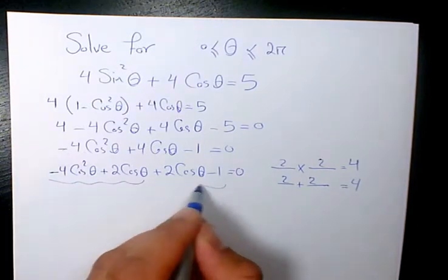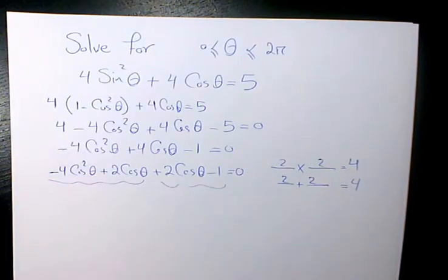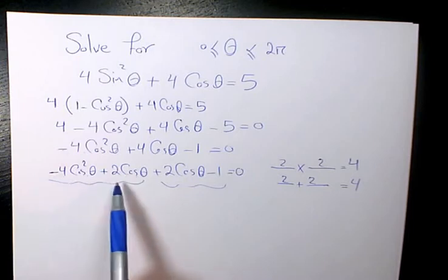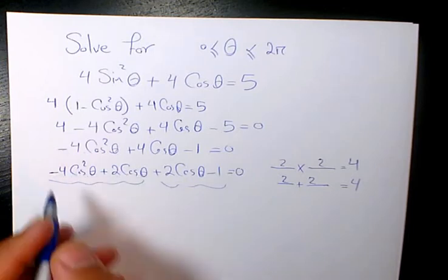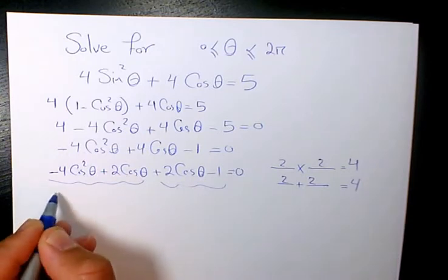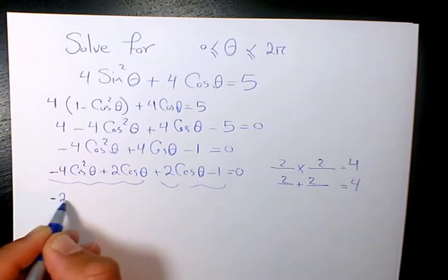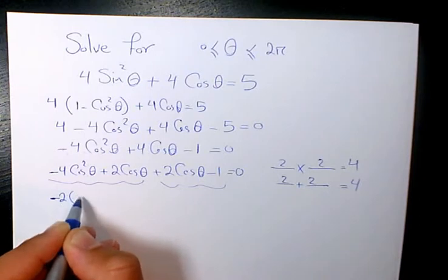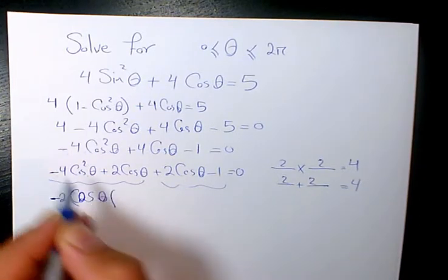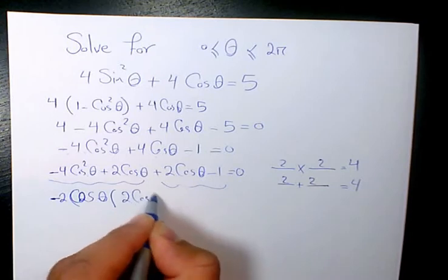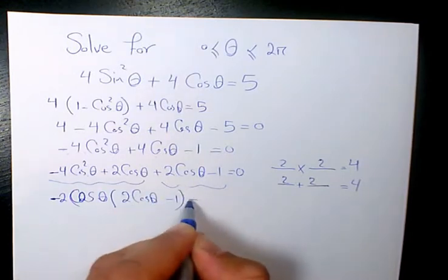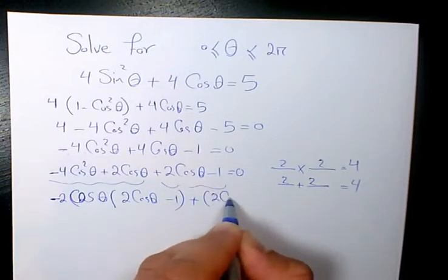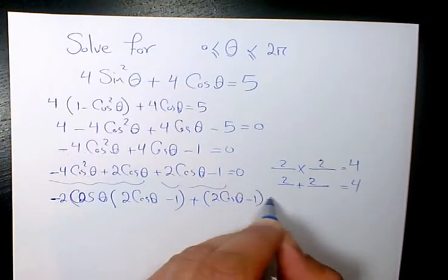Now I need to factor. In the first part, cosine is common and 2 is common, so I factor out negative 2 cosine theta, giving 2 cosine theta minus 1. The remaining terms also give 2 cosine theta minus 1, so the factored form is negative 2 cosine theta times 2 cosine theta minus 1, plus 1 times 2 cosine theta minus 1 equals 0.